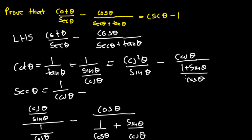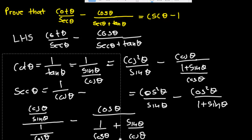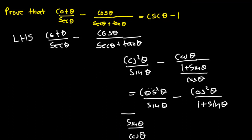We can turn the denominator upside down to get cos squared theta over sine theta, minus cos squared theta all over 1 plus sine theta. From the numerators we have cos squared theta in common, so we factorize cos squared theta out, leaving 1 over sine theta minus 1 over 1 plus sine theta inside the bracket.